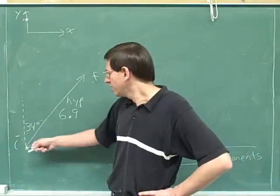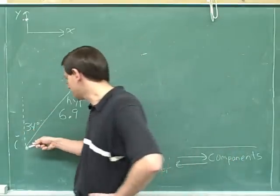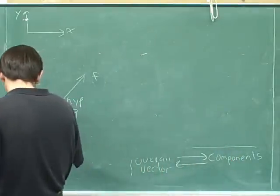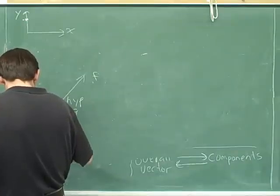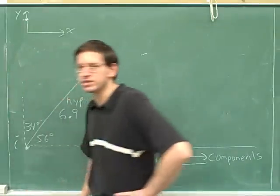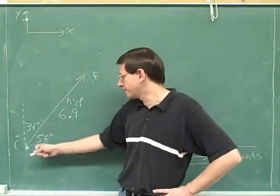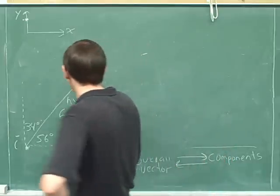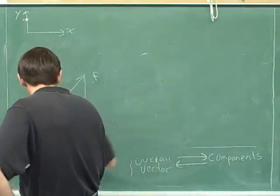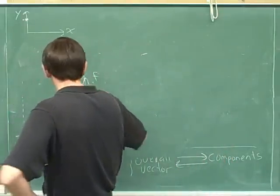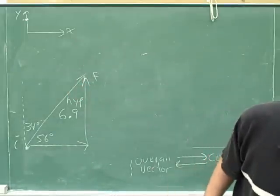That's perfectly OK. We know there are always a bunch of different angles you can find. This angle would have been approximately 56 degrees. So it's totally OK if you ended up finding this angle instead. Maybe a lot of you made this right triangle — it's totally OK if you made this right triangle.